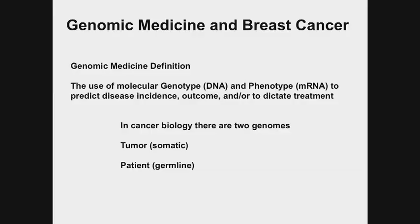In cancer biology, there are two genomes, and it's important to keep this in mind. One is the tumor genome, referred to as the somatic genome, and the other is the patient genome, or the germline. Last month, you heard from Larry Brody about germline mutations in genes like BRCA1 and BRCA2 that predispose patients to getting breast cancer. Today, most of my talk will focus on using the tumor genome to dictate management decisions, although I will touch on germline mutations later.